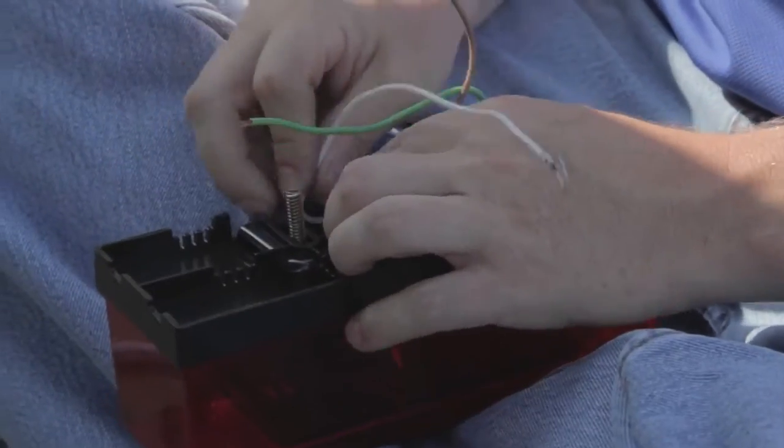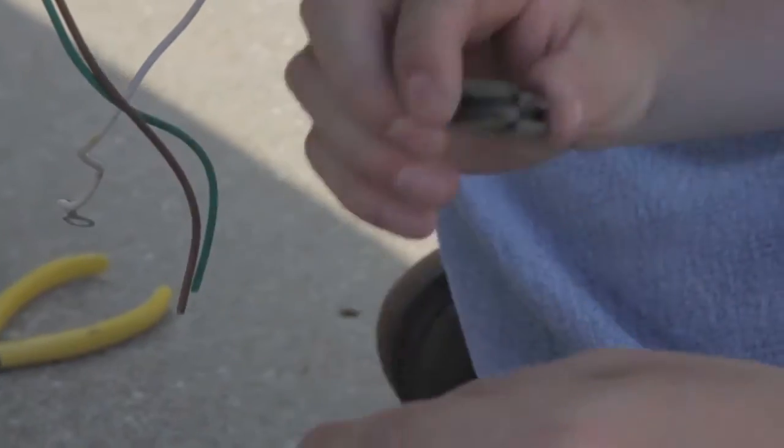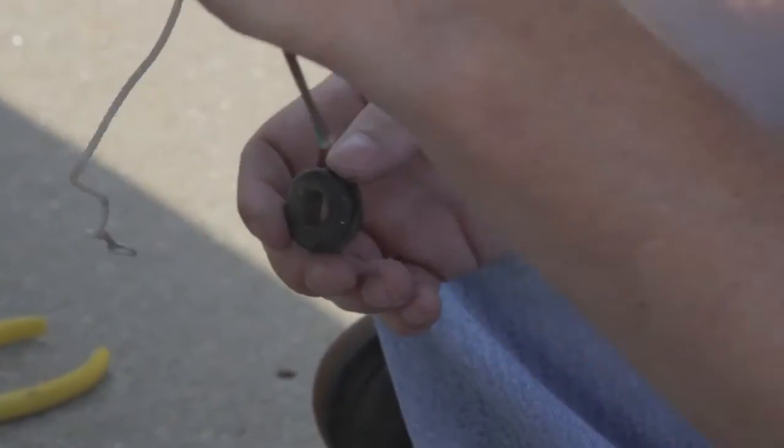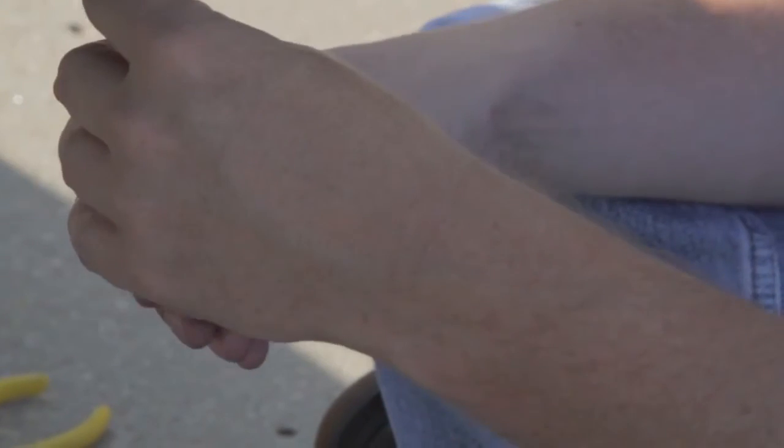Before disconnecting any wires, make note of the colors and position of the wires attached to the light. Carefully and cleanly clip each wire as close to the old light as practical. If the ground wire is equipped with a ring terminal, there is often no need to cut the ground.